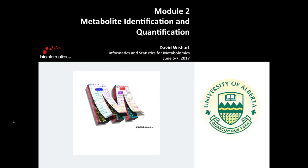What we're going to dive into now is metabolite identification and quantification. This is also called metabolite annotation, and it's actually probably the biggest bottleneck in metabolomics, at least as it refers to from the informatics side.